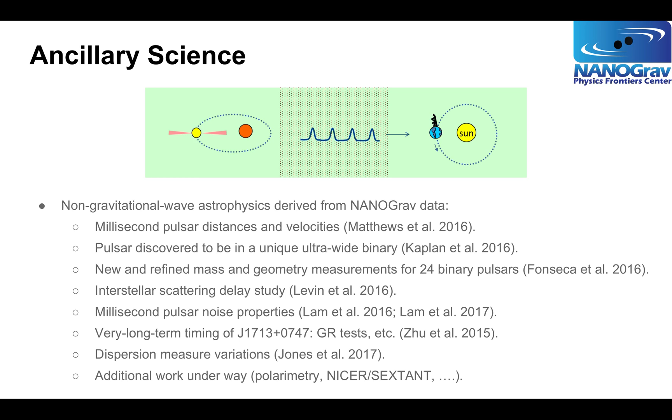Finally, we can try to do ancillary science. The NANOGrav detection working group takes the data we generate and searches for gravitational waves of various sorts in that data. The timing group also takes our data and we try to do other types of science from it. The list includes studies of millisecond pulsar distances and velocities. We actually discovered a pulsar we thought was isolated was actually in a unique, very wide binary system. We've made many new and refined mass and geometry measurements of binary pulsars. We've studied interstellar scattering, millisecond pulsar noise properties. We've done very long-term timing of J1713+0747, a super high precision timer in a binary system with a white dwarf that's useful for general relativity tests. We've studied dispersion measurements in the interstellar medium, and we're doing a lot of other work as well.